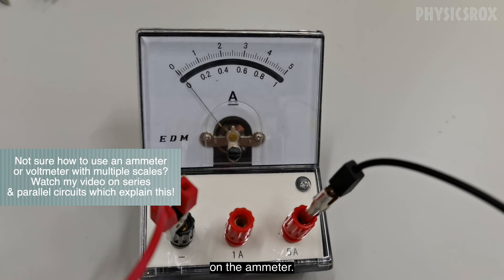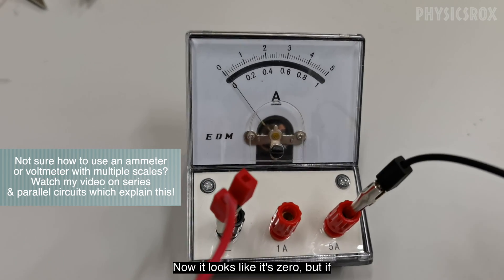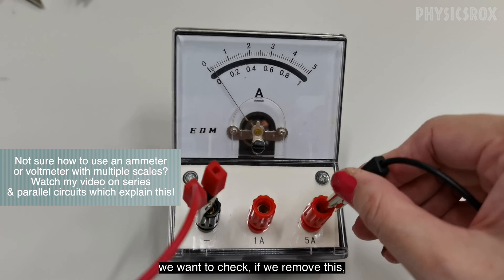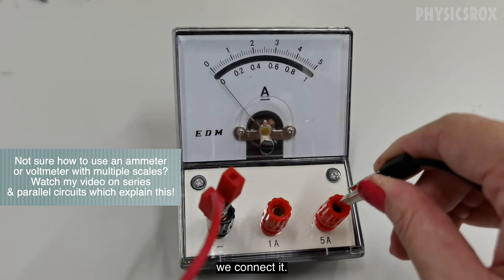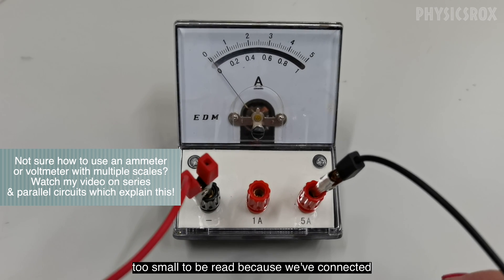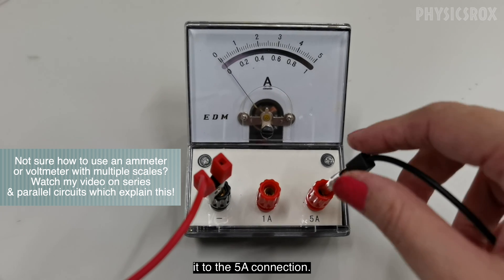And if we look, there is already a reading on the ammeter. Now it looks like it's zero, but if we want to check, if we remove this, it's zero. And then there's a reading when we connect it. So now the reading is a little bit too small to be read because we've connected it to the 5A connection.